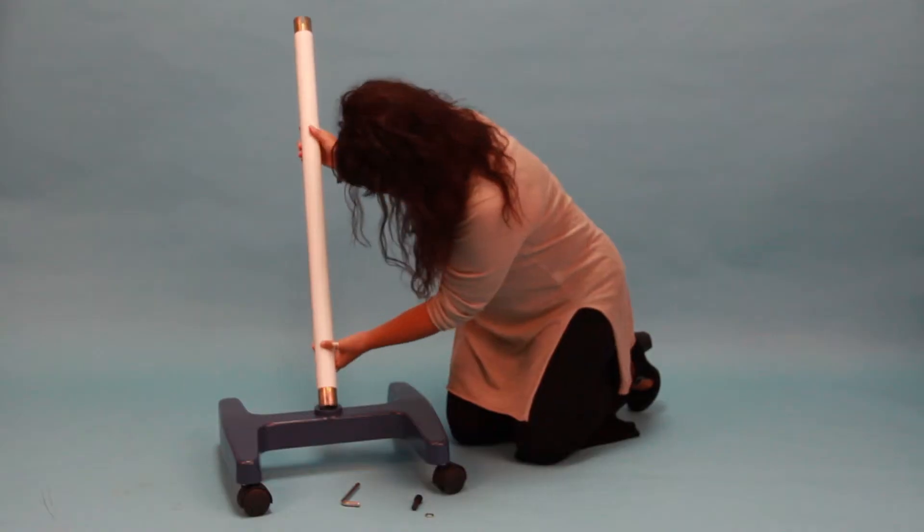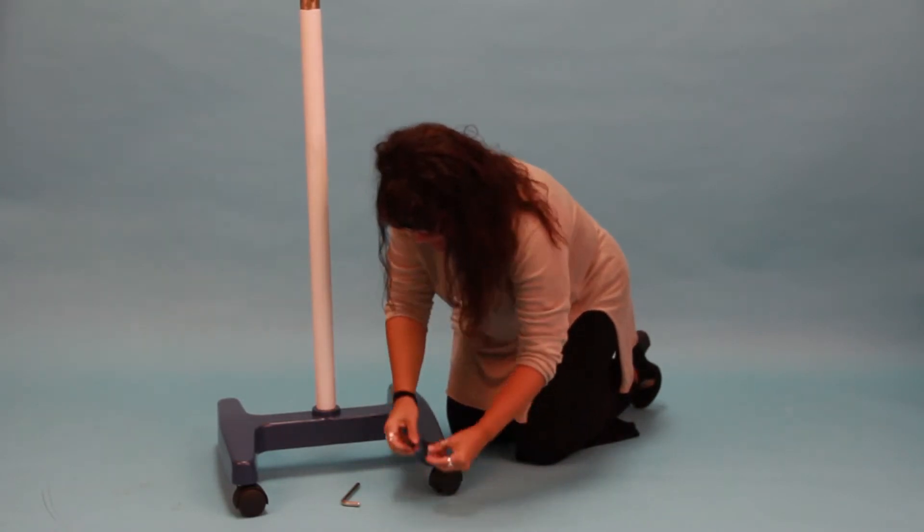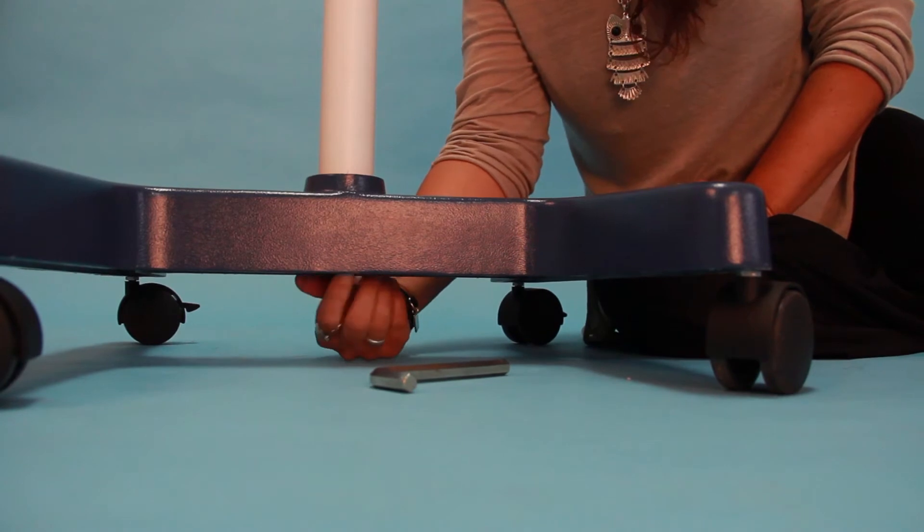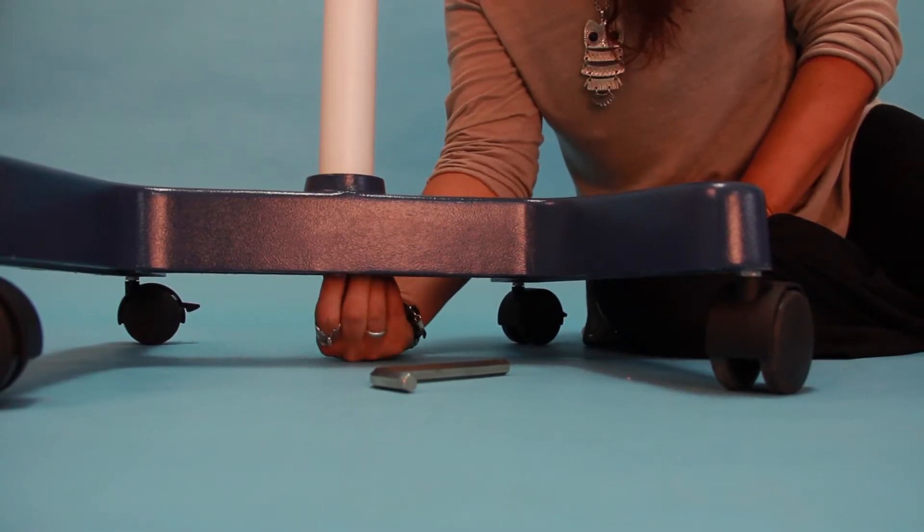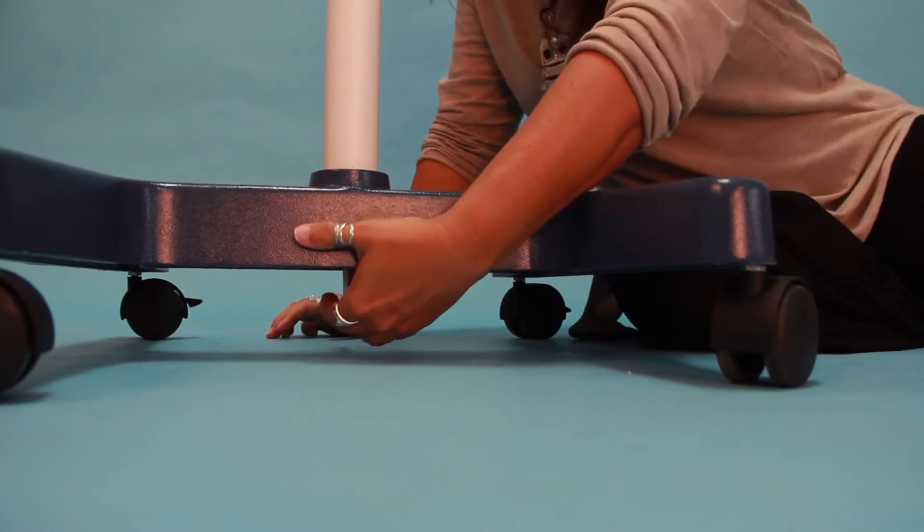Insert the post into the hole of the floor stand. Assemble in order the flat washer, spring washer, and inner hexagonal bolt. Insert the bolt in the bottom of the stand. Then fasten firmly with a 10 millimeter hex wrench.